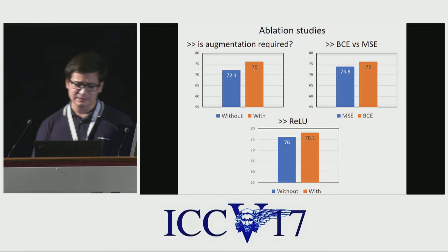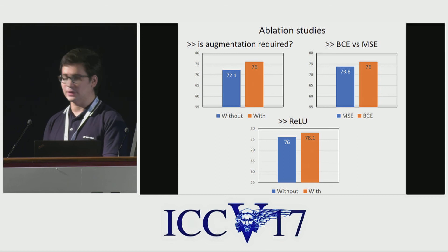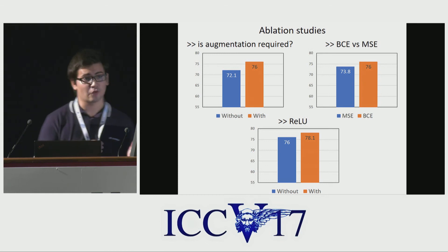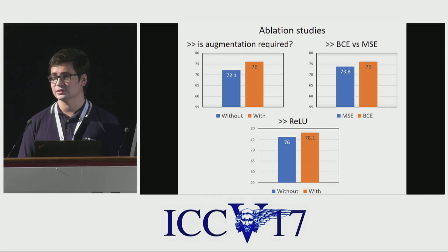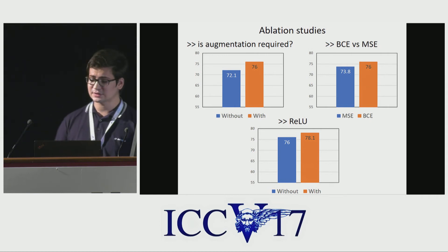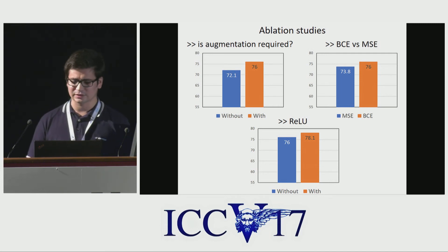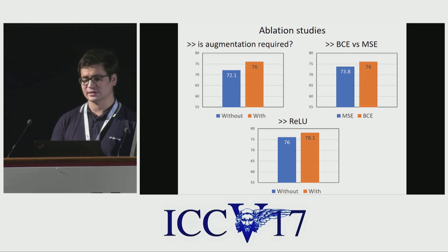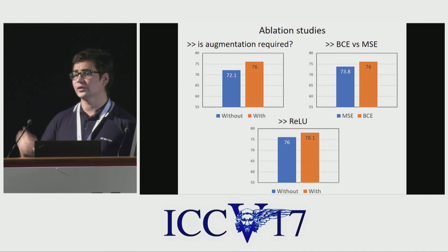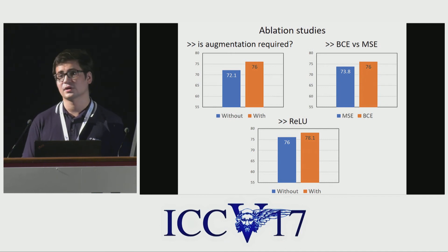We also investigated the effect of augmentation, the loss function, and the ReLUs on performance. We found that although binarization is an extreme case of regularization, augmentation is still required. Although L2 loss is the method of choice for human pose estimation, for binarized networks, due to smaller gradients, BCE is a much better choice. Similarly to the work of Rastegari et al., we found that adding a ReLU after each convolutional layer further improves the performance by 2%.